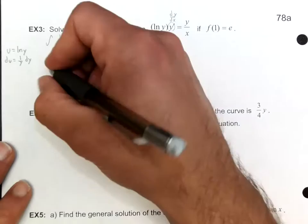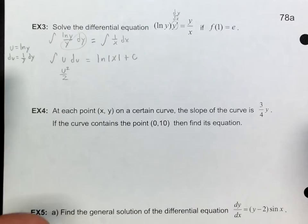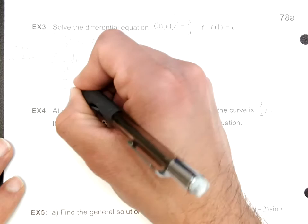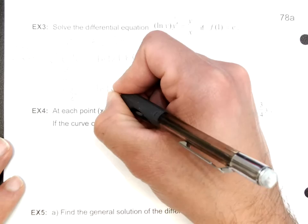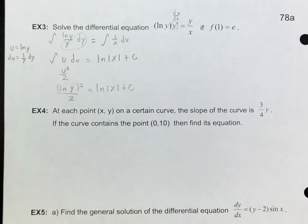This becomes the integral of u du equals the integral of 1 over x dx. The integral of 1 over x is the natural log of the absolute value of x plus c. On the left side, integrating u gives u squared over 2. Substituting back, we have the natural log of y squared over 2 equals the natural log of the absolute value of x plus c.